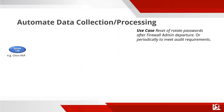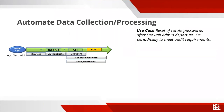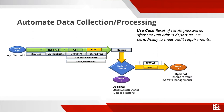Here's how you go about doing that. You're going to connect to your firewalls using the REST API with GET and POST commands. You connect, authenticate, list the users, generate a password, change that password, store or print the output to know what occurred, and then send that output via a POST command to another REST API — in this demo, a HashiCorp vault hosted locally on my system. If you have an enterprise vault deployment — Azure, Amazon, or others — you can do this pretty easily.